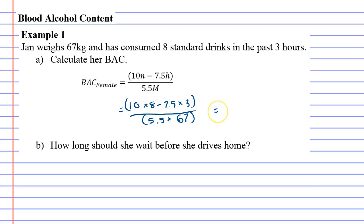I'm going to work it out. Bracket ten times eight minus seven point five times three close brackets, divide bracket five point five times 67 close brackets. This comes out to 0.16, we'll round it to two decimal places. Actually no, 0.156, we'll get a bit more accurate.